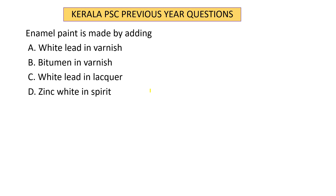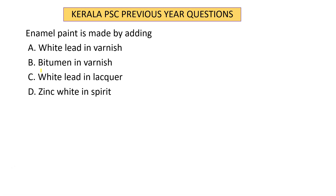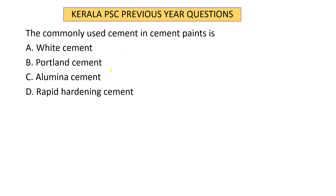Question 10: Enamel paint is made by adding white lead in varnish — option A, white lead in varnish, is correct. Question 11: The commonly used cement in cement paints is white cement. White cement is used in cement paint.